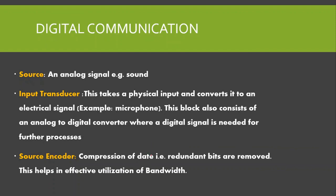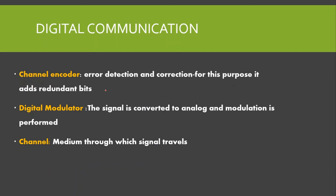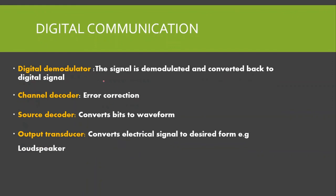Source encoding is performed — redundant and unnecessary bits are removed, helping in effective utilization of bandwidth. Next is the channel encoder, which performs error detection and correction. Then we have the digital modulator where the signal is converted to analog and modulation is performed. We have a channel, which is the medium through which the signal travels. Then we have the digital demodulator — the signal is demodulated and converted back to digital.